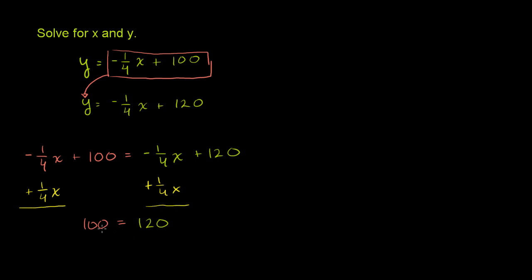We got this nonsensical equation here, that 100 equals 120. So this type of system has no solution, and you know it has no solution, because in order for it to have any solution, these two numbers would have to be equal to each other, and they are not. And if you look at the original equations, it might jump out at you why they have no solutions.